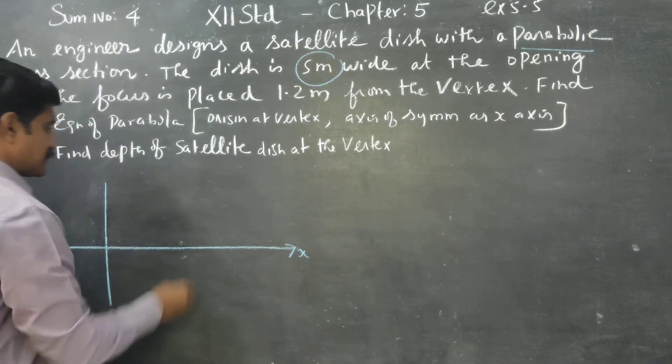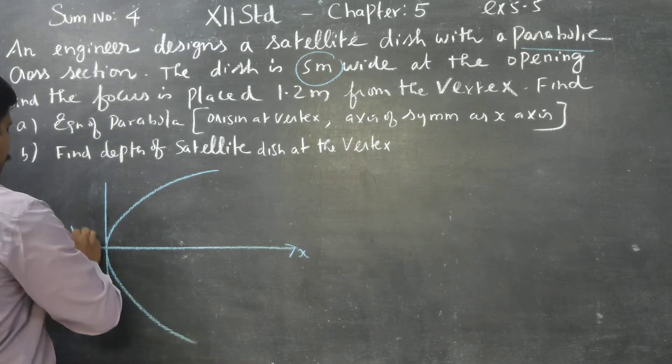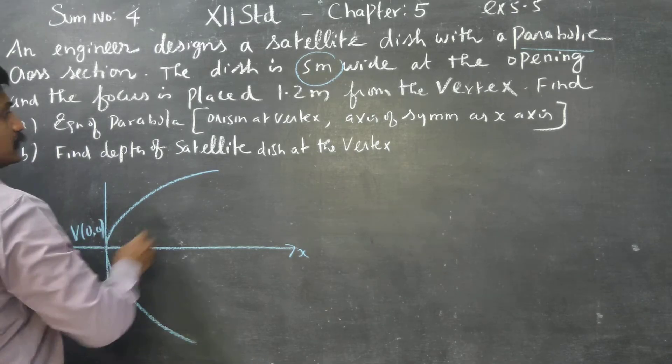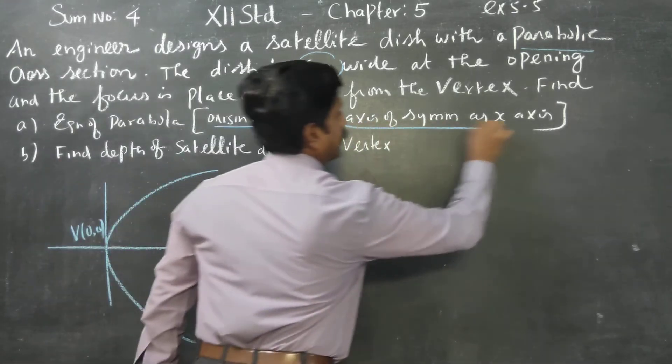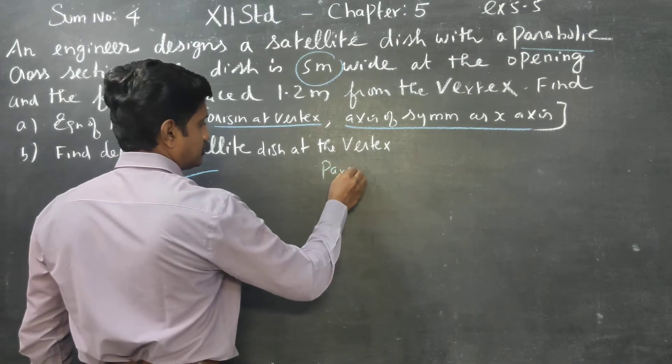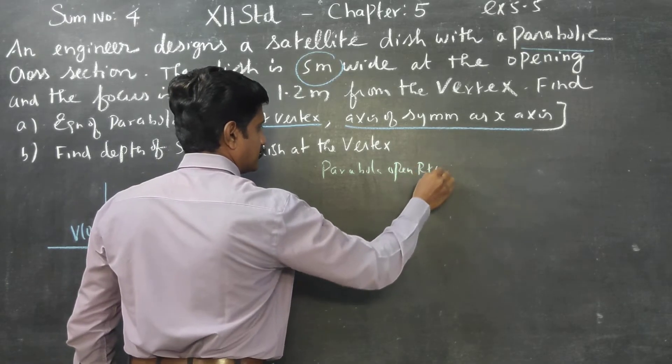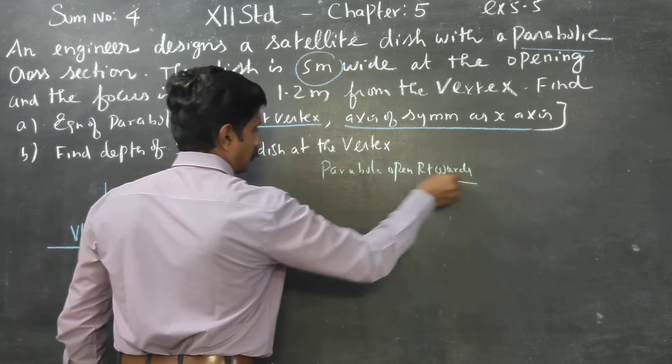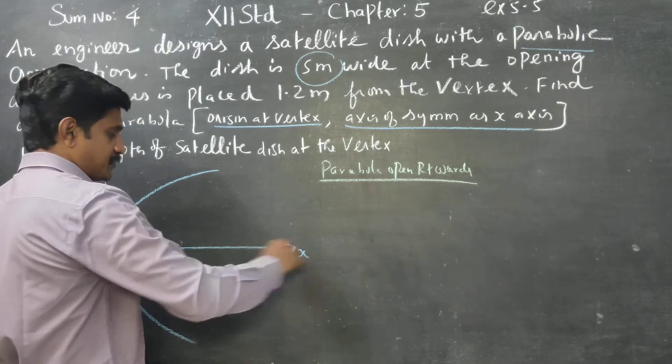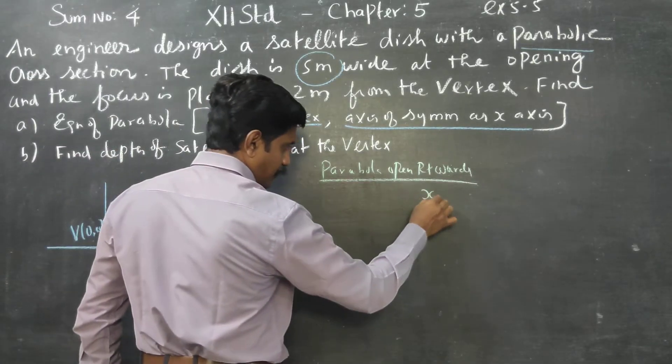This is the axis of symmetry, this is x-axis. The parabola is vertical. This is my vertex. Vertex is origin. Axis of symmetry is x-axis. The parabola is shaped as an open rightward parabola.